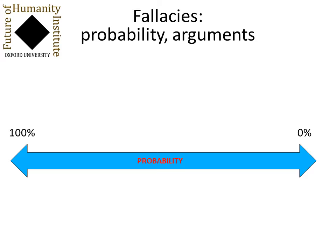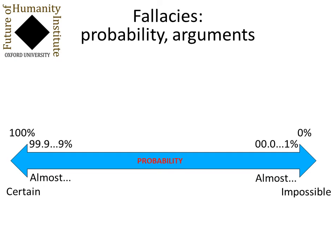First, as an intro, here's the probability line from 100%, which is certain, and 0%, which is impossible. Next to these we have things like 99.9 and 0.001, etc., which are almost certain or almost impossible.